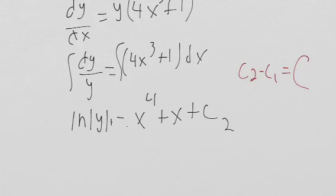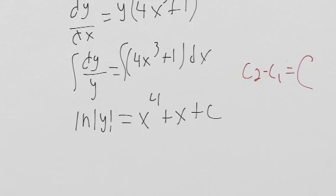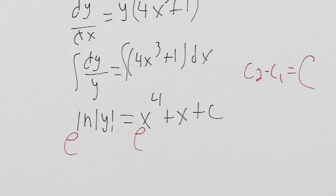I'm just going to not write a plus c right here and not call this c2. We're just going to have the c be on one side of the equation. So we have natural log y equals x to the 4th plus x plus c. So now to isolate y, we're going to have to e everything. So we get y equals e to the x to the 4th plus x plus c.